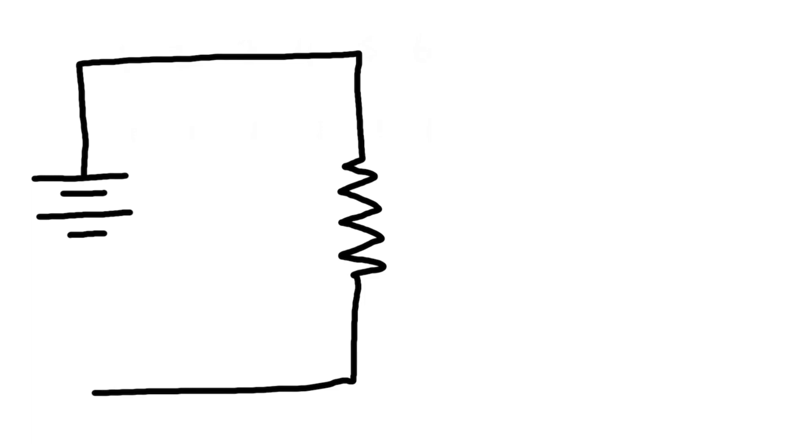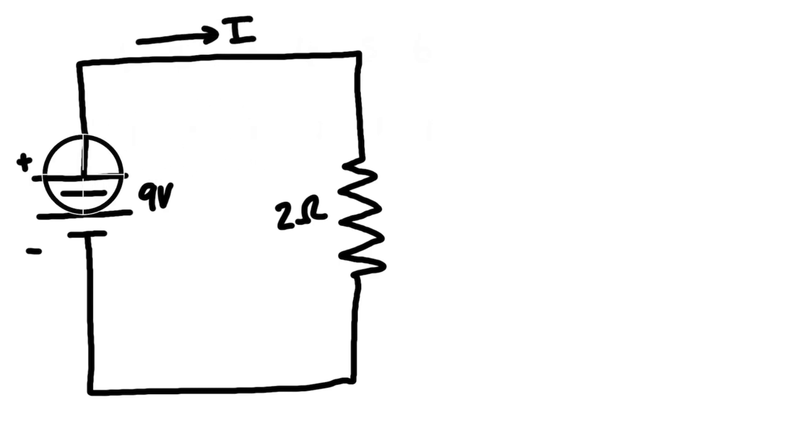Let's draw a circuit with a 9 volt battery and a 2 ohm resistor. We have conventional current flowing from the positive terminal around the circuit to the negative terminal. To calculate the current...